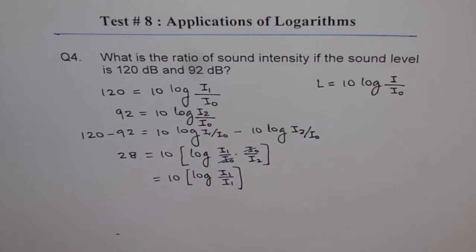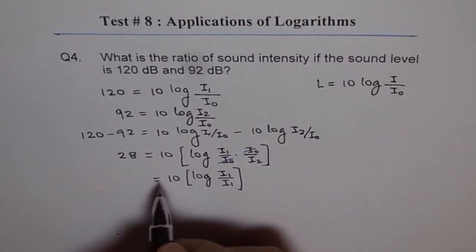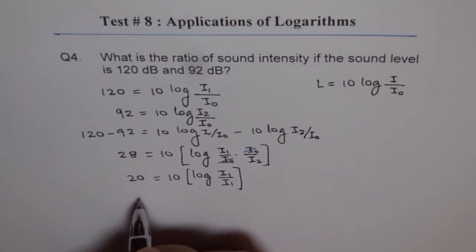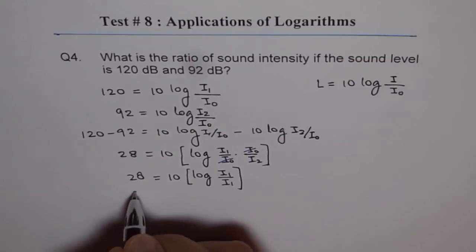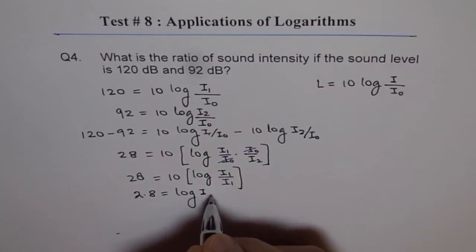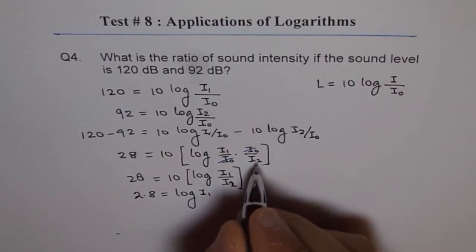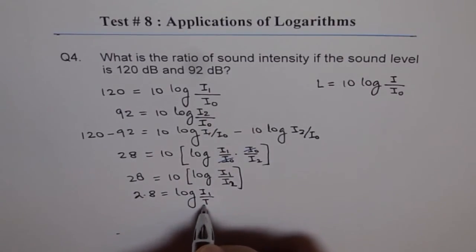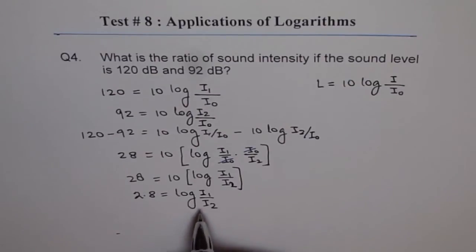We can divide 28 by 10 and we will get 2.8 equals log of I1 over I2. So the ratio of I1 over I2 is 10 to the power of 2.8, and that is our answer.